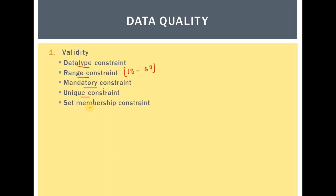The set membership constraint refers to the fact that the values of a feature are supposed to be from a given range of values, but when the value does not come from that range then that is violating the set membership constraint. For example, if the value of a feature can be either A, B, or C and the value found in the dataset is neither of these legitimate values for that feature, then that value is out of the membership set and is therefore going to affect the validity of the data.